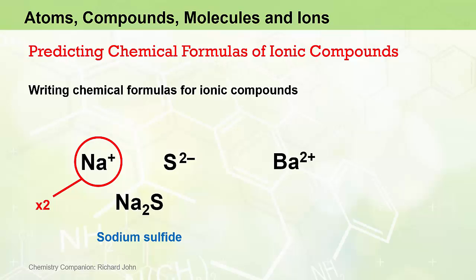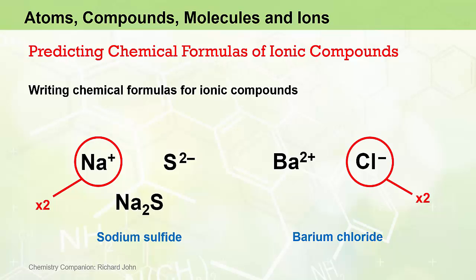When the barium 2+ ion comes together with the chloride ion, the resulting compound is called barium chloride. These two ions will not come together in a one-to-one ratio because the Cl 1− ion does not cancel out the charge on the 2+ barium ion. We're going to need two lots of the chloride ions to balance out the 2+ charge, and we write the chemical formula as BaCl₂. Again, we don't write ones in chemistry, so there's no subscript of one for the barium.